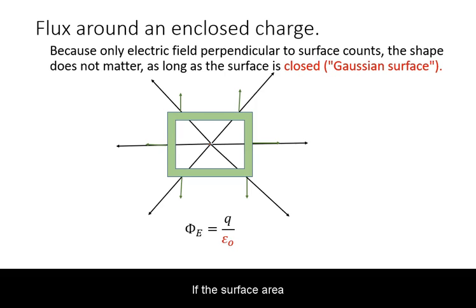If the surface area completely encloses the charge, then its shape will not matter. It will intersect the same number of arrows.